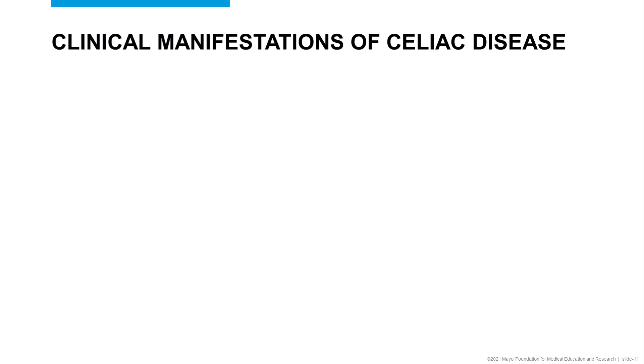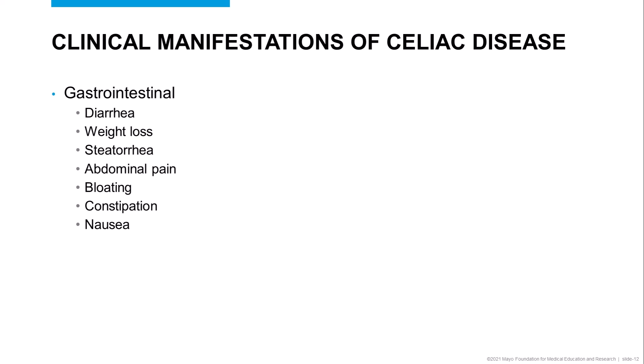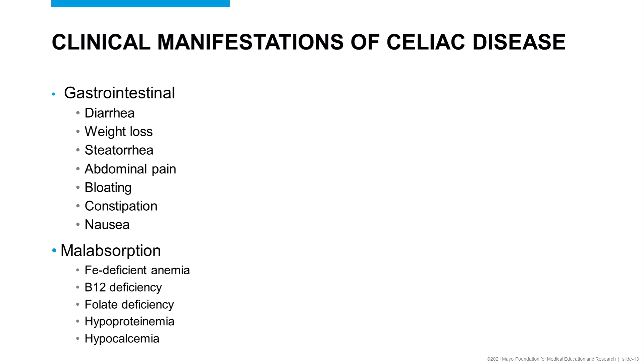The clinical symptoms associated with celiac disease vary widely. In the context of gastrointestinal symptoms, patients may present with diarrhea, weight loss, steatorrhea, or abdominal pain, just to name a few. Because of the villus atrophy in the small intestine, patients with celiac disease may not be able to absorb nutrients from their food. As a result, patients may show symptoms of malabsorption, including iron deficient anemia, various vitamin deficiencies, hypoprotein anemia, or hypocalcemia.